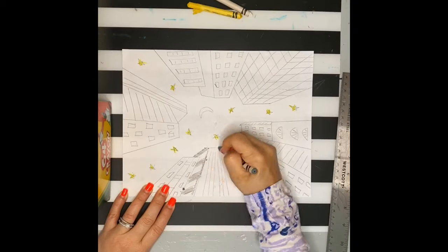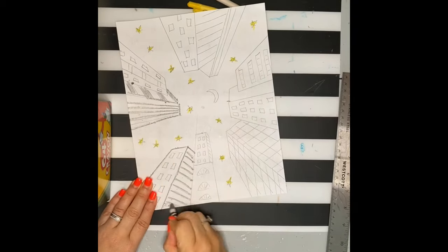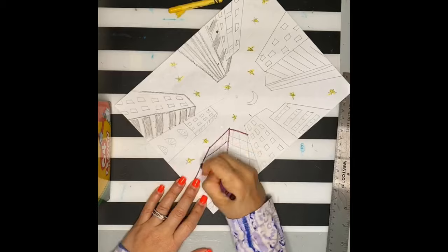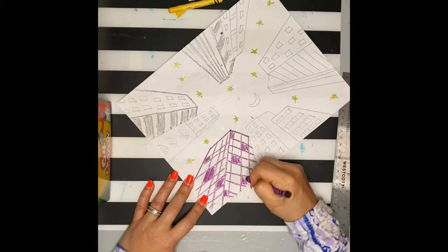With my watercolors, I'll paint the skyline. Then using a light black, I'll fill in the rest of my buildings. You can do any colors you want. I just like the contrast of the black with the colorful sky.